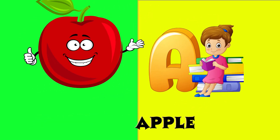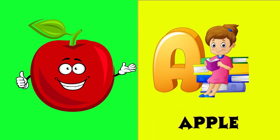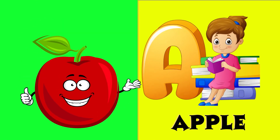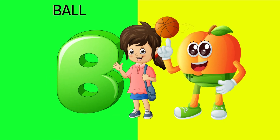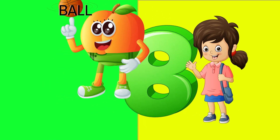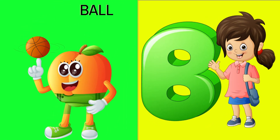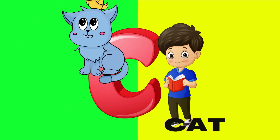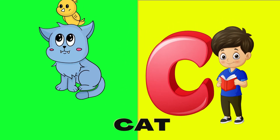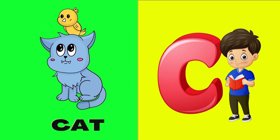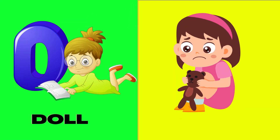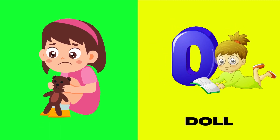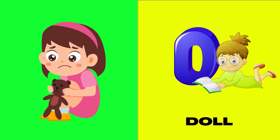A is for apple, a-a-apple. B is for ball, b-b-ball. C is for cat, c-c-cat. D is for doll, d-d-doll.